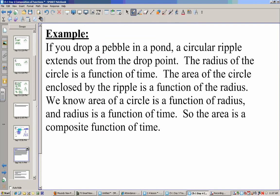So if we have that, now here's an example of a composition function in the real world. If I drop a pebble into a pond, a circular ripple extends out from that drop point. The radius of that circle is a function of time. So radius will increase as time increases. The area of the circle enclosed by the ripple is a function of the radius. We know that the area of the circle is a function of the radius, and the radius is a function of time, so the area is a composite function.